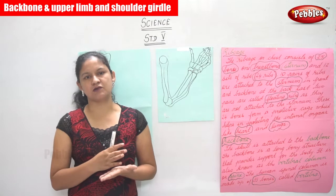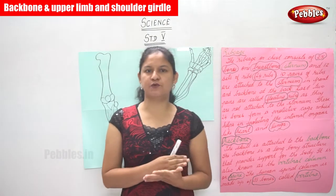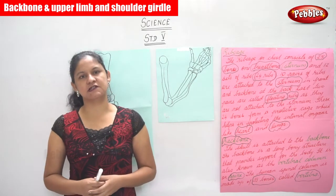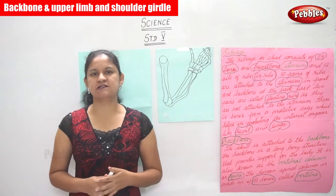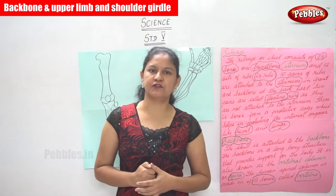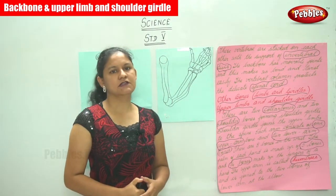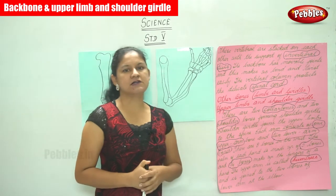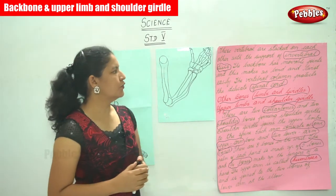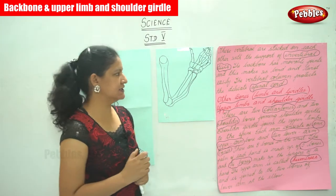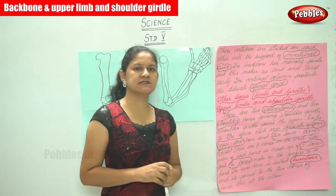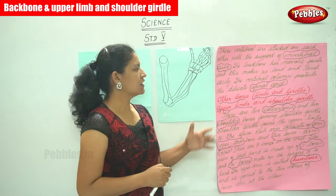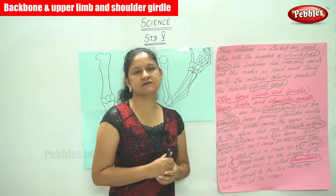The components we discussed are the skull and the rib cage. The skull protects the brain, the rib cage protects the heart and the lungs, and the backbone — the spine — is the most important and is called the vertebral system of the skeleton. The backbone consists of 33 bones called vertebrae, stacked one on top of each other with the support of intervertebral discs. The backbone has movable joints, which makes us bend and twist easily. The vertebral column protects the delicate spinal cord.